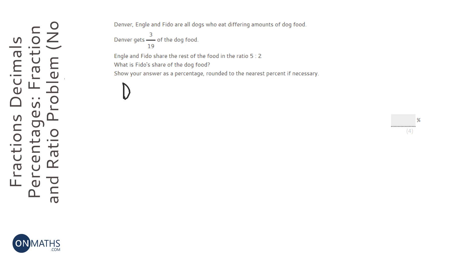So first of all, just show the information so that I can get my head around it. So we've got Denver, who as a fraction has 3/19ths of the food, and so that leaves how much? Well, we've got a calculator, so we could just do 1 take away 3 over 19 on the calculator, but we know that's going to be 16 over 19.